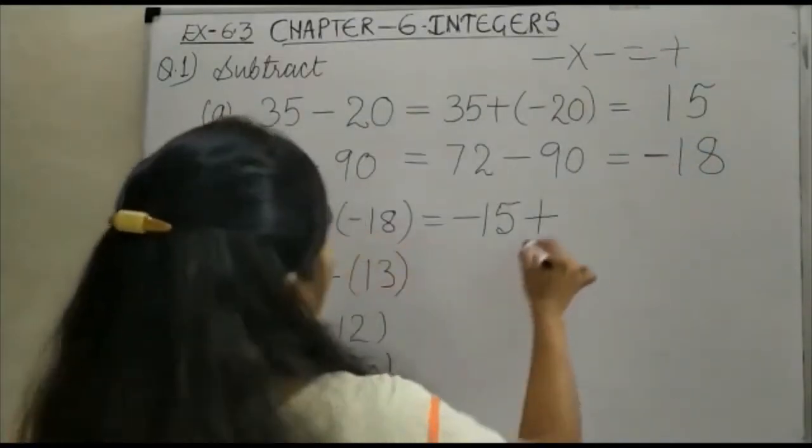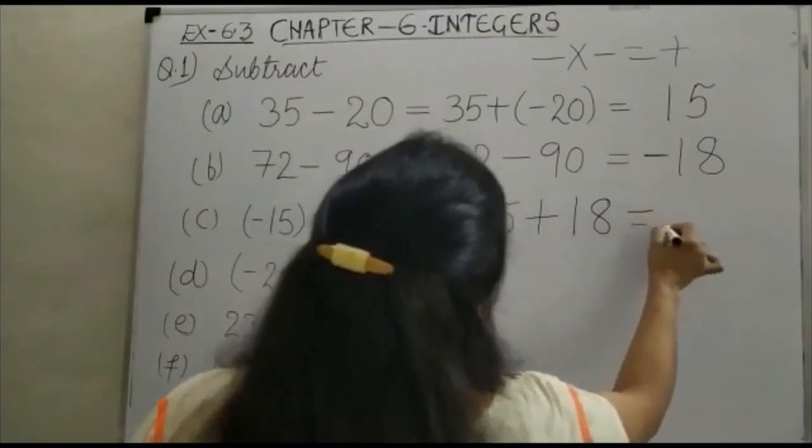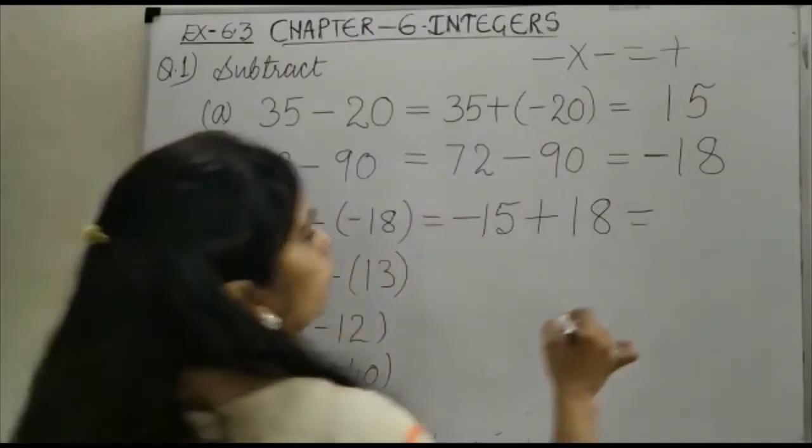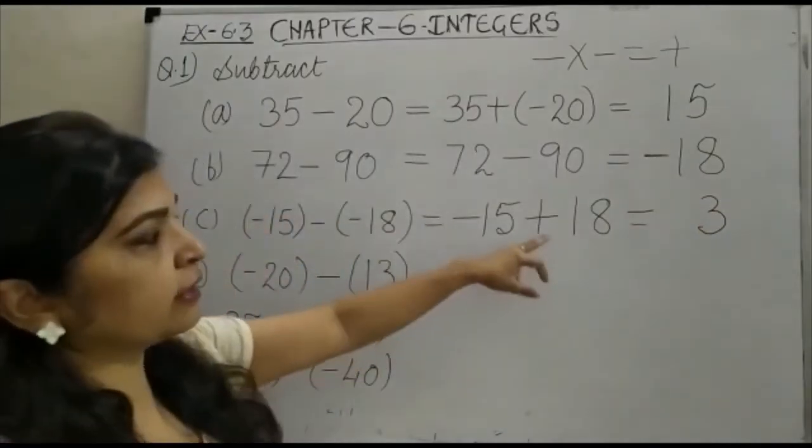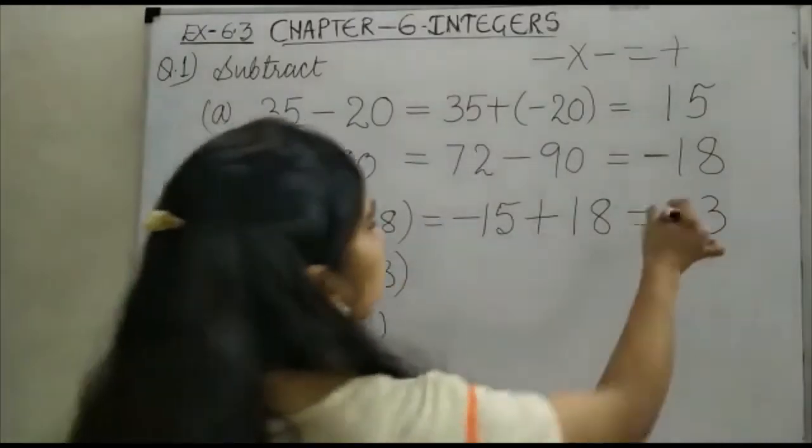So this becomes plus and this is your 18. So this will be your 18. Now what will be the sign of this 3? Bigger number is 18, so this will be positive.